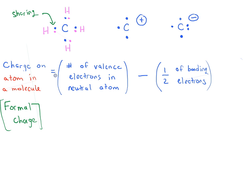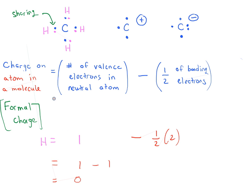We modify the formula to subtract one-half of the number of bonding electrons. For hydrogen: valence electrons in neutral atom = 1, minus one-half times two bonding electrons = 1 minus 1 = zero. So the formal charge on hydrogen in this bond is zero. Each of the other hydrogens gives the identical result — they all end up with a formal charge of zero.